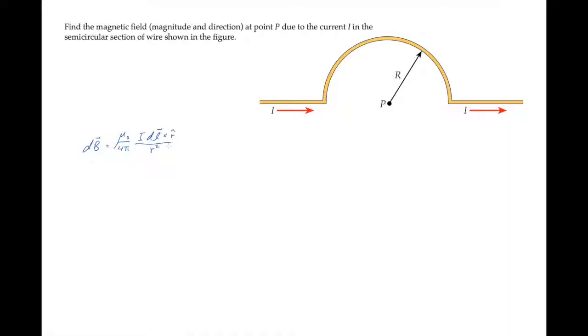If we look at a segment on one of the straight parts of the wire, we can see that dl and r-hat are parallel. So that cross product vanishes, and the only contribution to the magnetic field will come from the semicircular curved part.